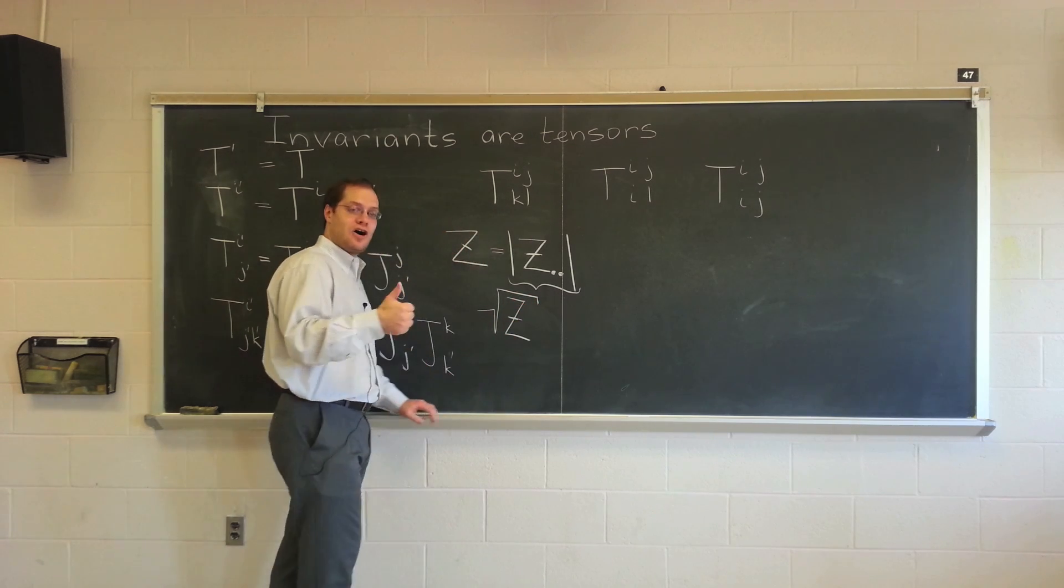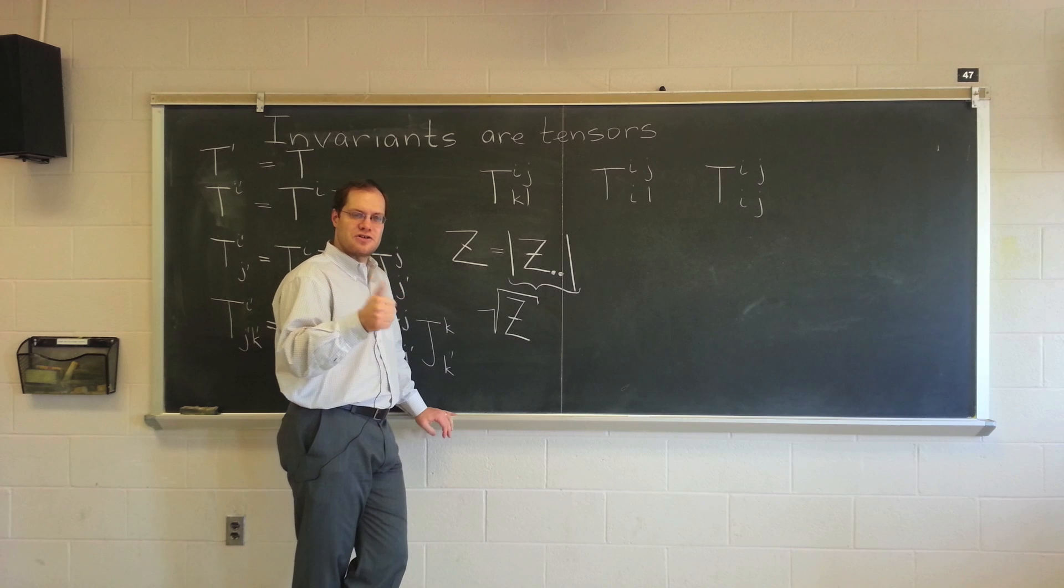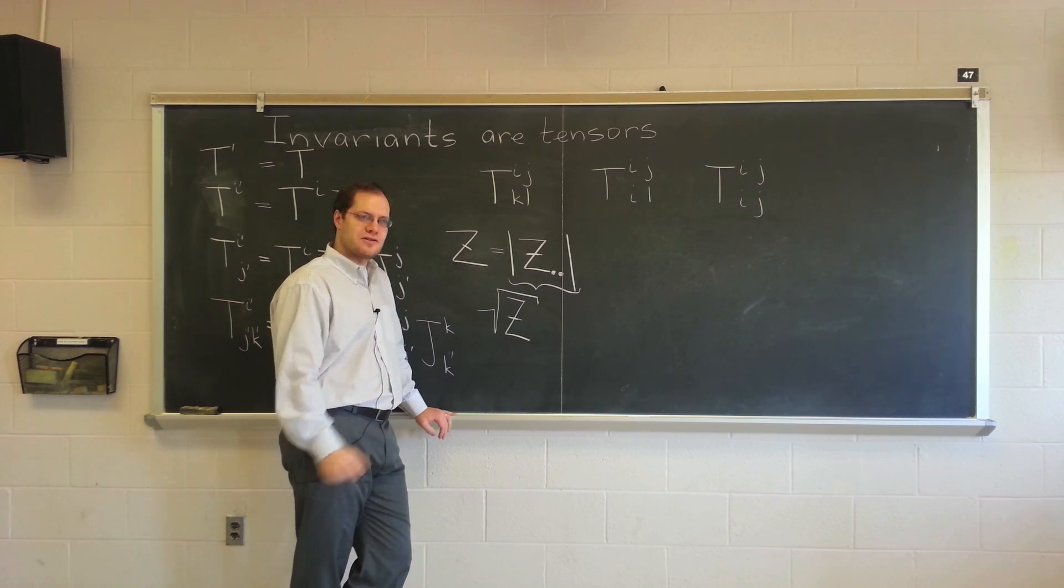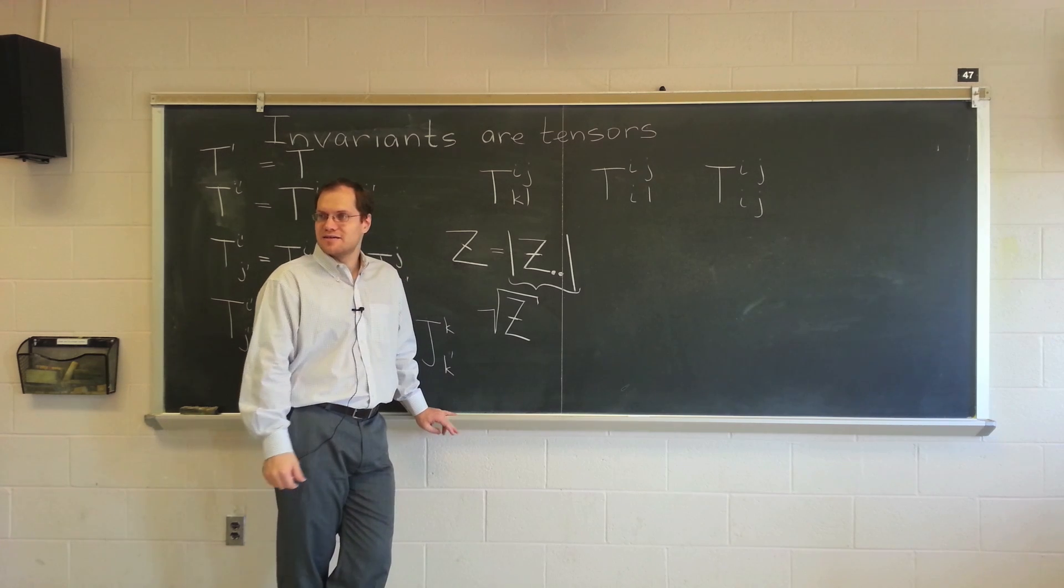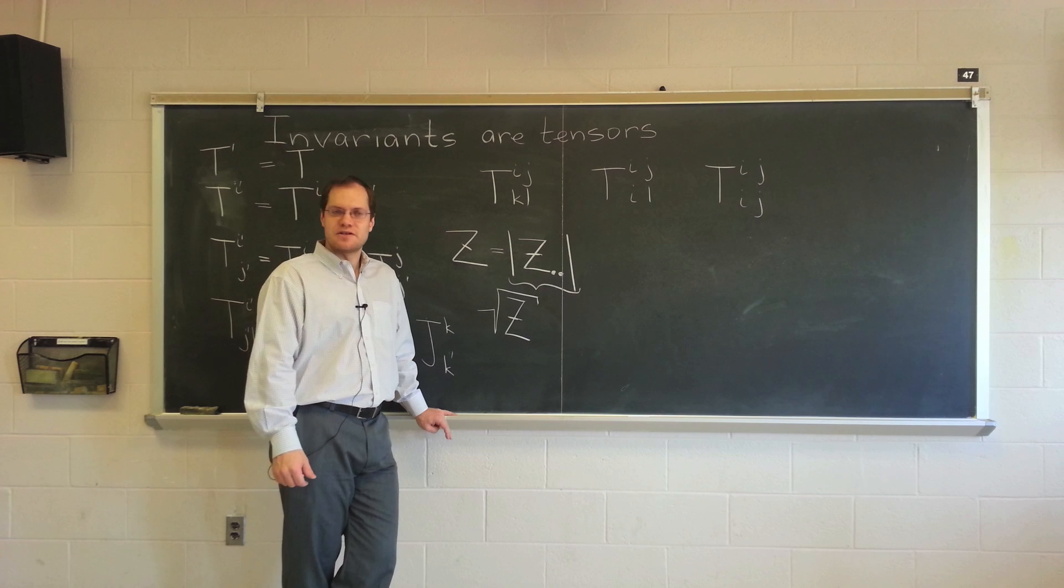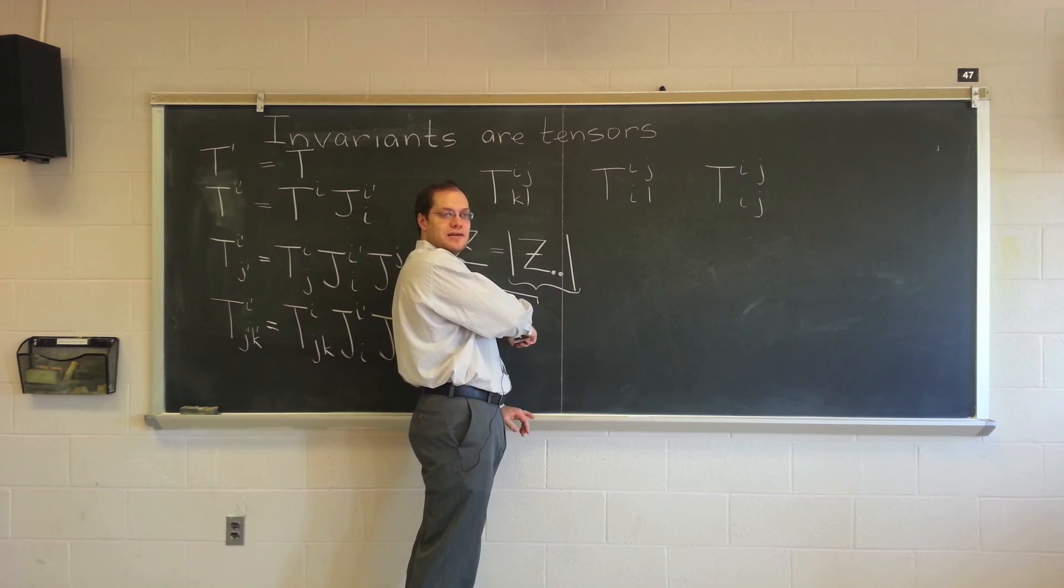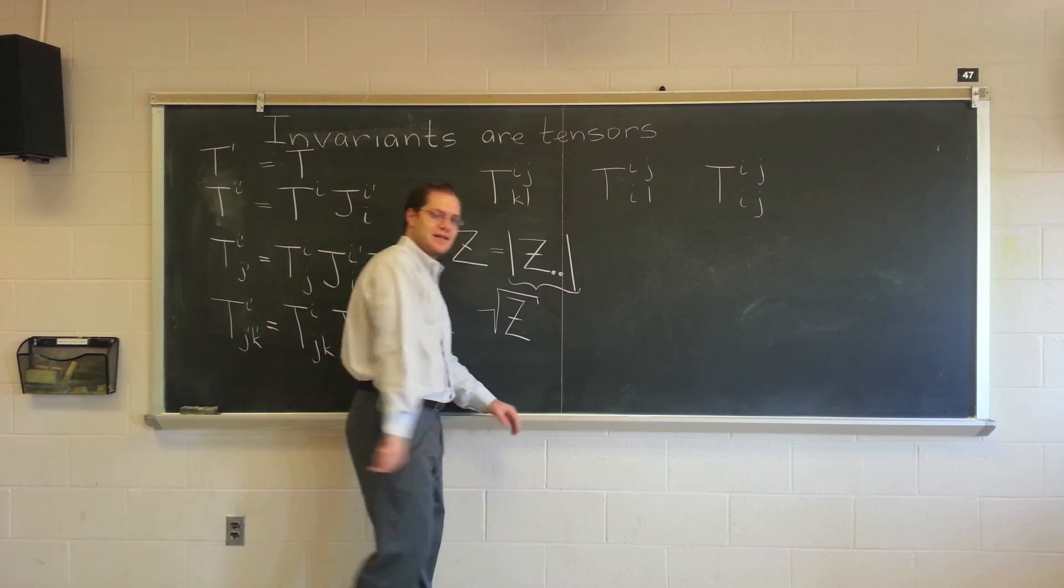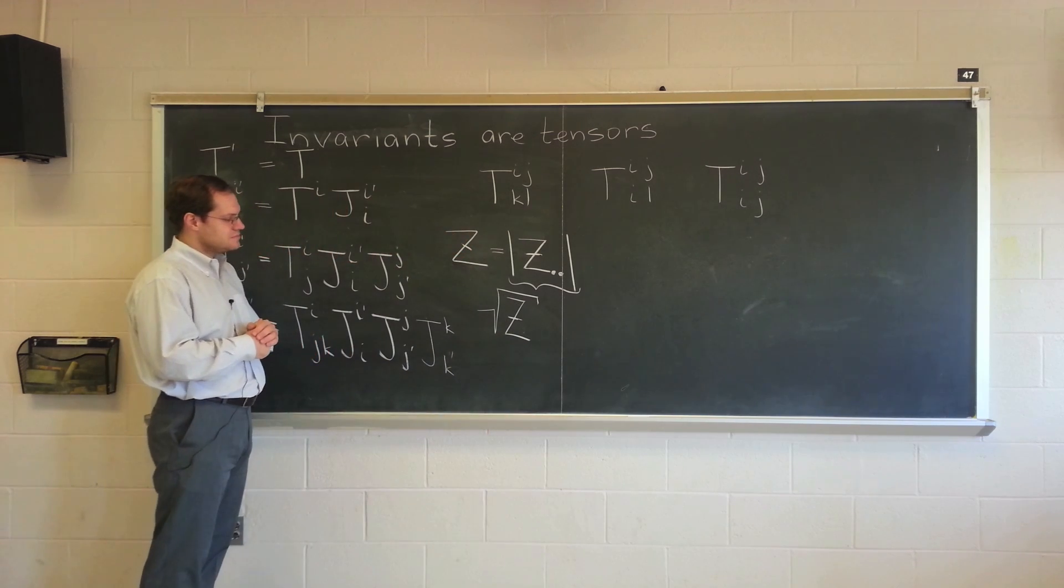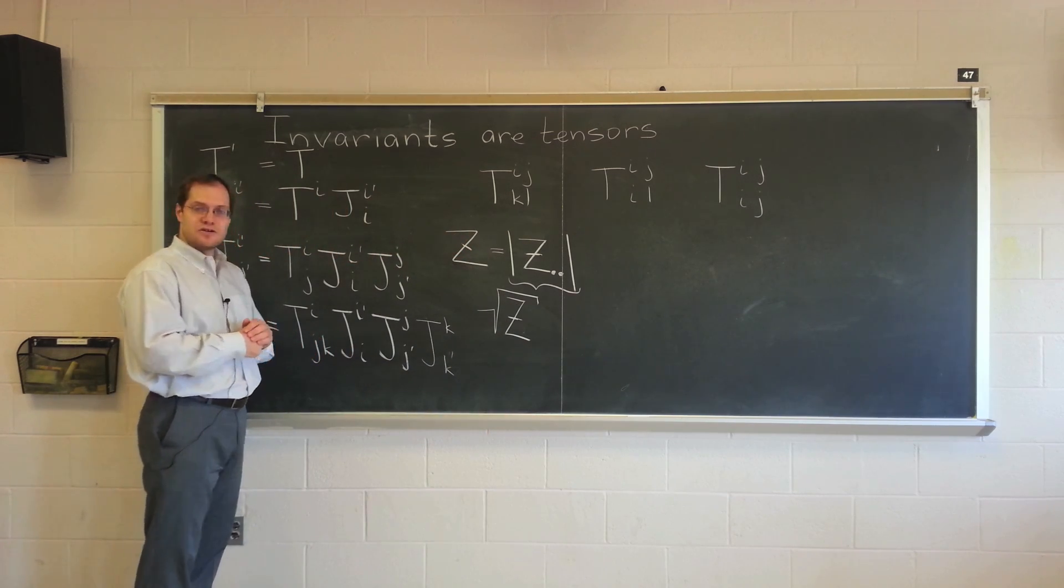But I know what you were talking about. You were talking about square root of Z. So square root of Z is R, is 1 for Cartesian coordinates, R for polar coordinates, and R squared sine theta for spherical coordinates. And it is called the volume element. And you can kind of see why, because that's what will appear in the integral when you evaluate volumes.